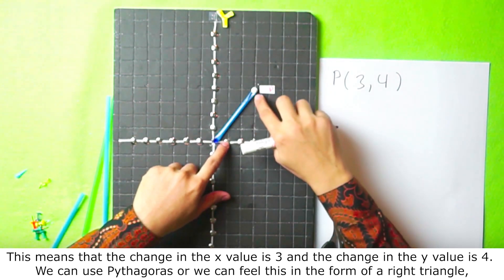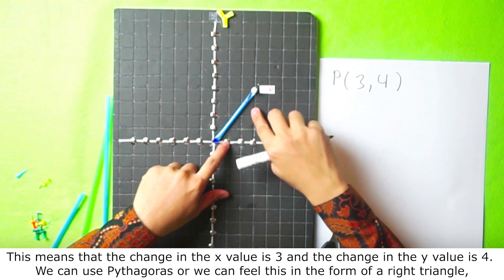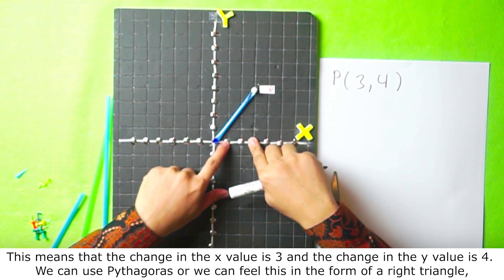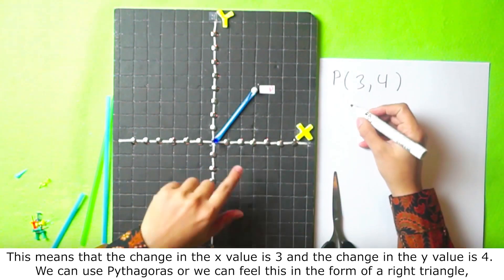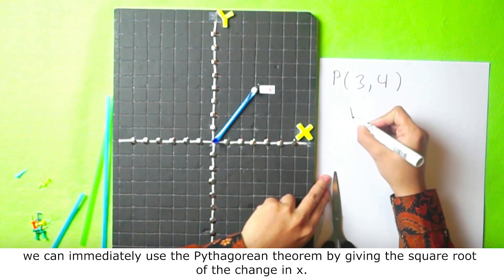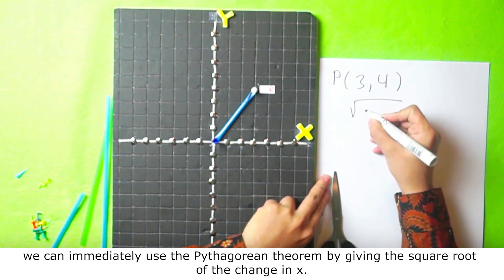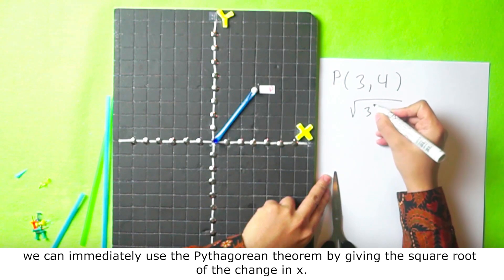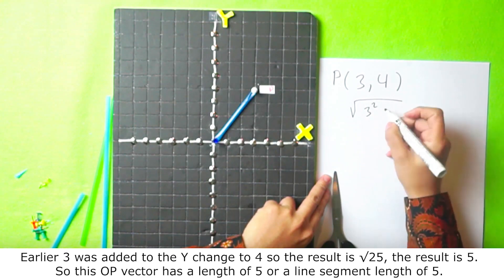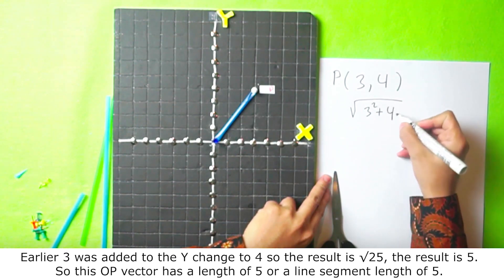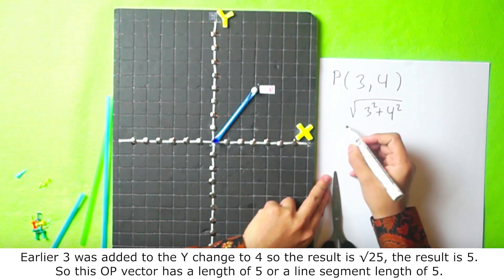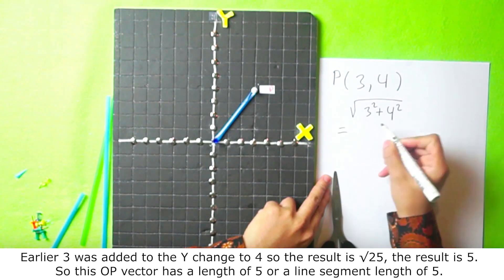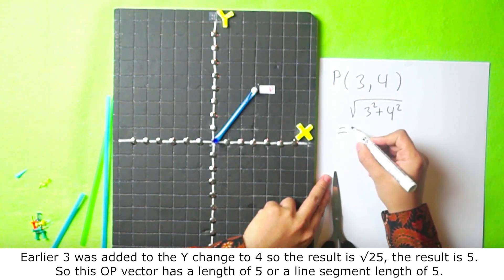We can use Pythagoras or we can fill this in the form of a right triangle. We can immediately use the Pythagorean theorem by giving the square root of the change in x. Earlier, 3 was added and y changed to 4, so the result is square root of 25.